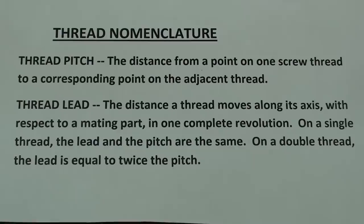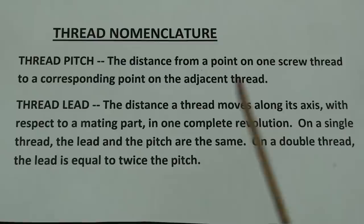Thread pitch is the distance from a point on one screw thread to a corresponding point on the adjacent thread, and the thread lead is the distance a thread moves along its axis with respect to a mating part in one complete revolution. On a single thread, the lead and pitch are the same. On a double thread, the lead is equal to twice the pitch. Now, since this is a single thread, the lead and the pitch are the same, and I may use those words interchangeably.